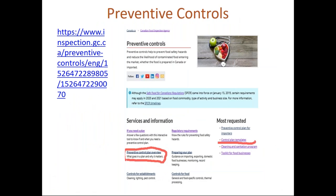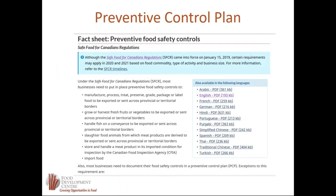If you go back to the preventive control plan page and click 'preventive control plan overview,' this is another tool provided on the website that you should read if you plan on doing your own plan. They have a downloadable fact sheet containing essentially all of this information. You need to read through it — I could read through it with you, but you really need to sit down and let it sink in.